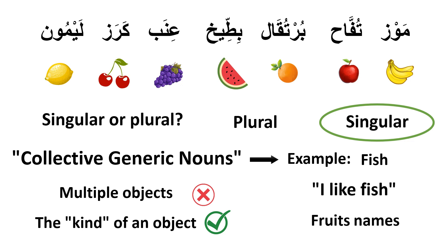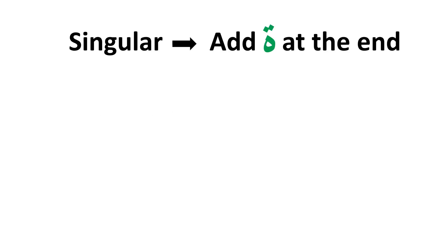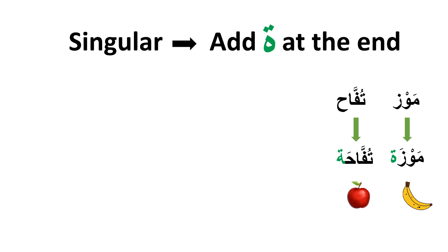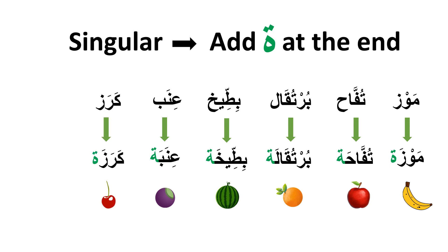The same goes for fruit names in Arabic. An English example is 'fish' — when you say 'I like fish,' you're referring to the kind of animal. To get the singular form of these nouns, we simply add تاء مربوطة at the end: موز becomes موزة (one banana), تفاح becomes تفاحة (one apple), برتقال becomes برتقالة (one orange), بطيخ becomes بطيخة, عنب becomes عنبة, كرز becomes كرزة, and ليمون becomes ليمونة.